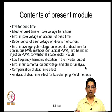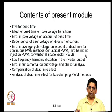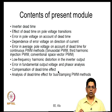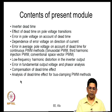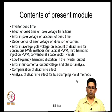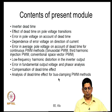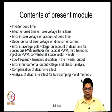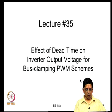Towards the end of the last lecture we looked at low frequency harmonic distortion, error, and phasor analysis for sinusoidal PWM methods. We will recap that, then see how to compensate for dead time. Most importantly in this lecture, we will analyze the effect of dead time for bus clamping PWM methods, which is the main new topic not covered before.